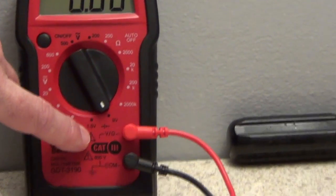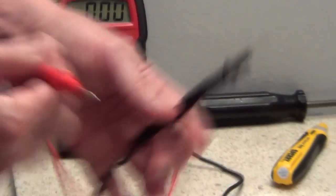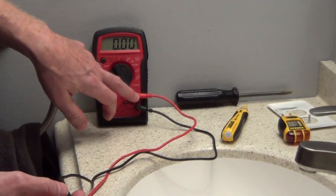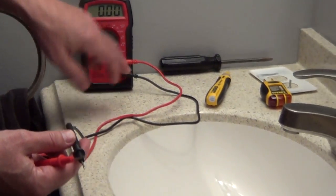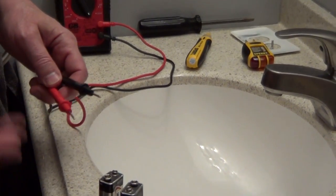When you're plugging your tester in you're going to have one side that has the red lead and one side that has the black lead. When you're testing regular AC current it doesn't matter which probe you use.